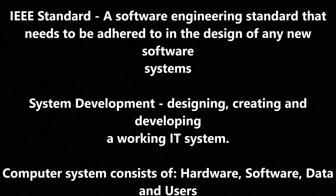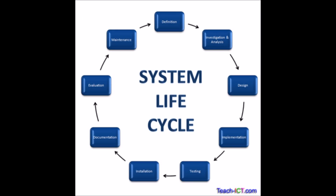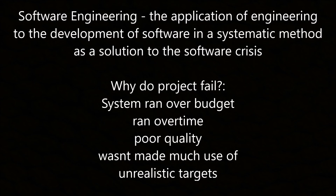The IEEE standard is a software engineering standard that needs to be adhered to in the design of any new software system. System development is the design, creation, and developing of a working IT system, and a computer system consists of hardware, software, data, and users. Software engineering is the application of engineering to the development of software and a systematic method as a solution to the software crisis.